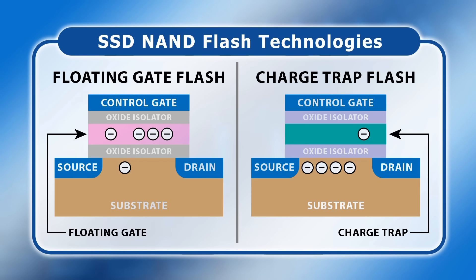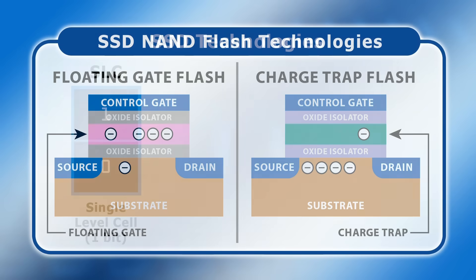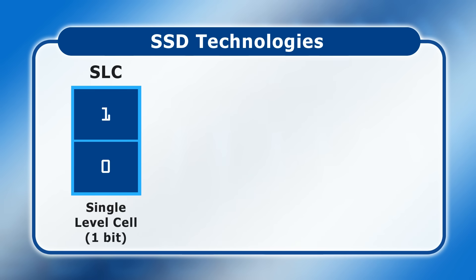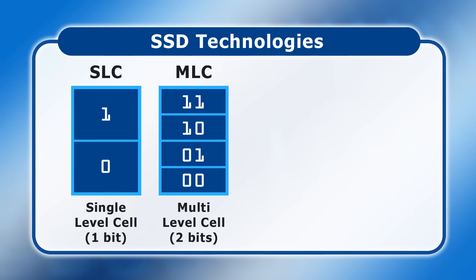The number of program-erase cycles a memory cell can sustain depends in part on how much data it has to hold. Initially, all SSDs stored just one bit of data per flash memory cell, which we now refer to as single-level cell or SLC. However, to scale up capacities for a reasonable cost, multi-level cell or MLC was developed, storing two bits per memory cell by distinguishing two additional states between fully programmed and fully erased. As the cell wears out and electrons stray, it's more difficult to accurately distinguish four different states compared to two, so MLC SSDs have fewer usable program-erase cycles than SLC devices.